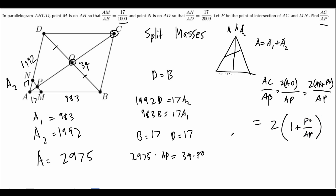So what is PO over AP? You just divide both sides by AP times 34, and you get 2975 over 34. So you add one to this, you get 2975 plus 34 over 34, which would be—let's do some quick calculations—I believe it is 177 over 2.